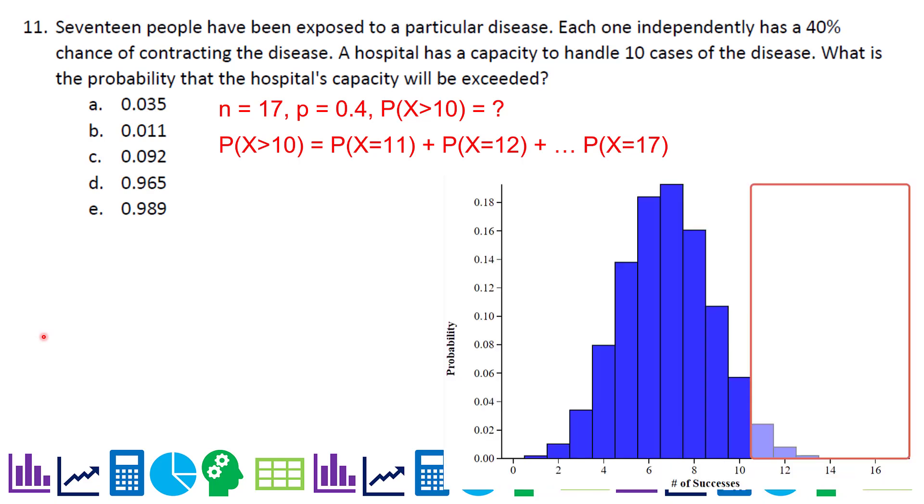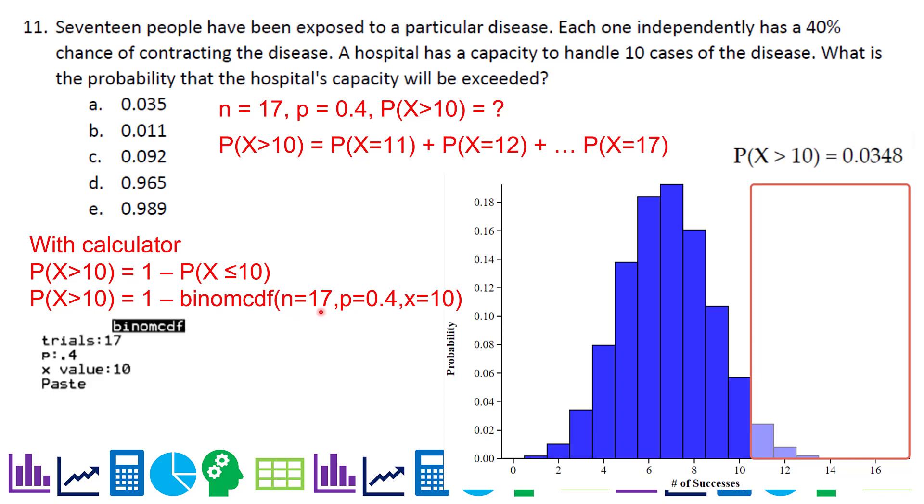Now I can go use Staplet and say N is 17, P is 0.4. And then I can tell it 11 and higher. You can see that the box is around the 11 all the way to the 17, and it gives you a value of 0.0348. I just want to make sure that I show calculator here occasionally. With the calculator, it doesn't do boxes to the right like this. It will do one to the left though. So what I could do is do the probability of 0 to 10. That's the cumulative distribution function. You're going to plug in these values. N is 17 or trials is 17, P is 0.4 and X is 10. And then when you go one minus that value, you get the same thing that the Staplet spit out, which is 0.0348, which is basically 0.035.